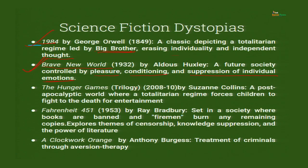The Hunger Games trilogy — three books published from 2008 to 2010 by Suzanne Collins — depicts a post-apocalyptic world where a totalitarian regime forces children to fight to the death for entertainment. Viewers in a far away land place their bets on who is going to win and who is going to die. The sick entertainment they achieve from this — that is the Hunger Games.